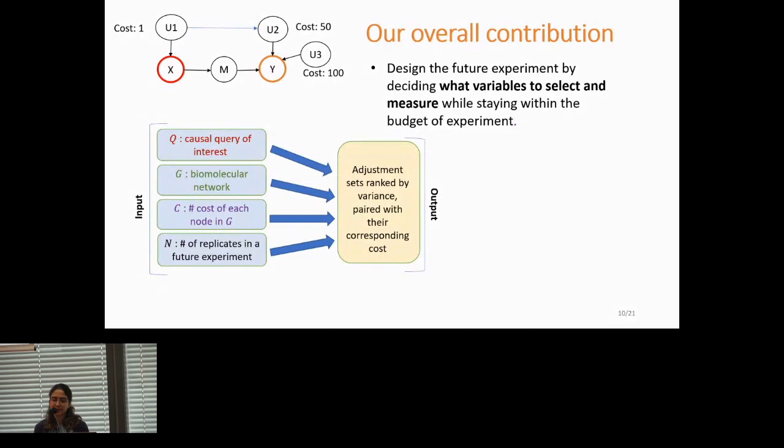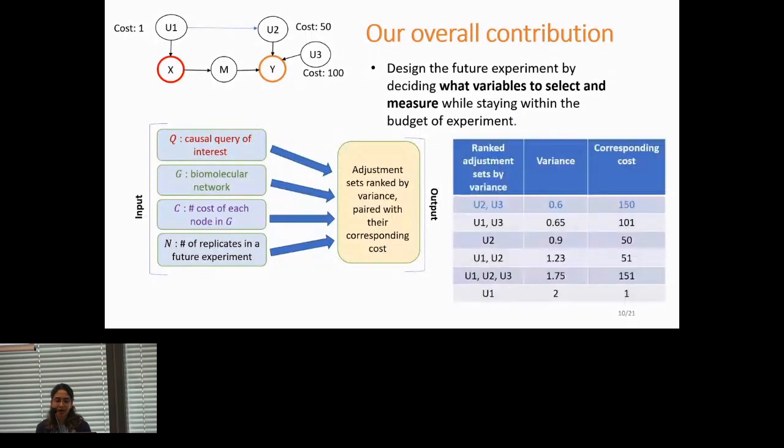The output of our approach is a set of all the valid adjustment sets, which are ranked according to variance, and they are paired with experimental costs. So, for example, going back to the previous example, the output of our approach is a table like that, where it will rank all the adjustment sets according to the variance for estimating the query. So the first row has the adjustment set with least asymptotic variance, and you can see the actual value of variance and the corresponding cost. Now one can just compare the first row, for example, with the second row, and see that it has a slightly higher variance than the first choice, but the cost is significantly lower. So the experimenter has the ability to actually look at the list and compare the variances and costs and pick the one that has a reasonably low variance while still within the budget of experiment.